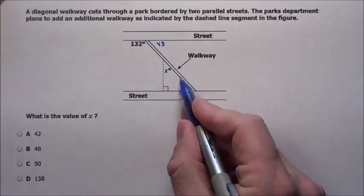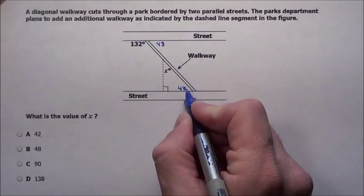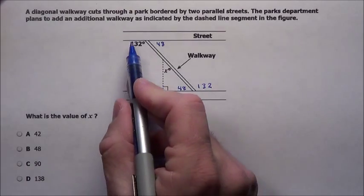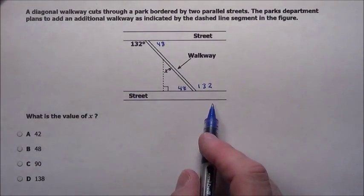And knowing that this is a transversal, we can use the Z pattern. This corner's got to be 48. Over here's got to be 132. And it makes common sense because you can see that's an obtuse angle, so it's going to have to match the obtuse up there, since these streets are parallel.